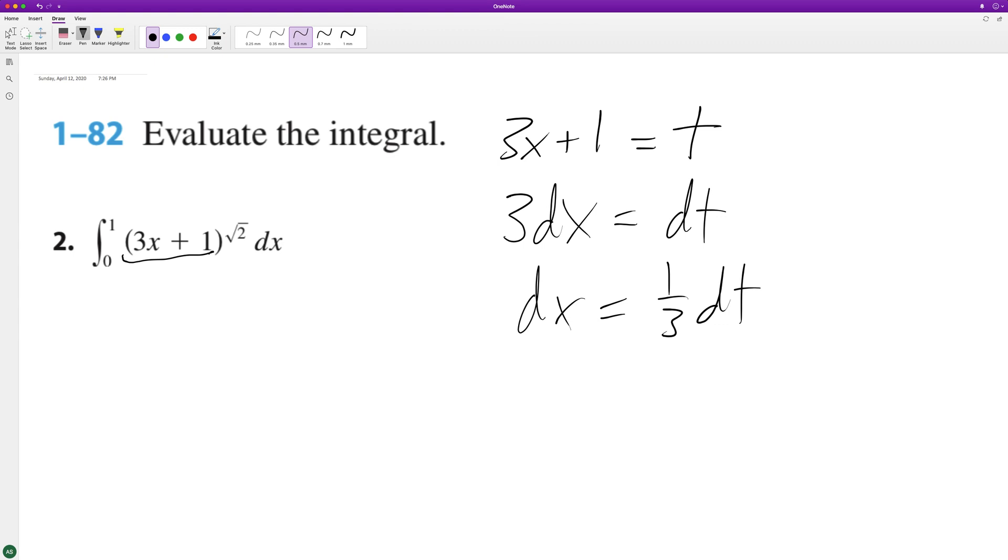Now we need to substitute our integral bounds from 0 to 1. What we do is plug in 0 and then 1 into our substitution for t. When we plug in 0 into 3x plus 1, we get 1. And when we plug in 1, we get 4.